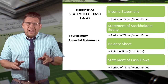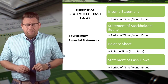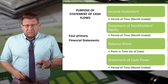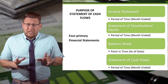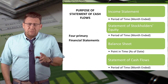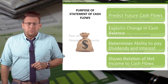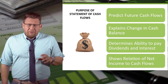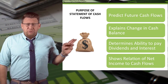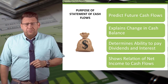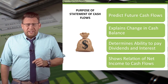The balance sheet, you recall, is for a point in time. So it tells investors and creditors about the financial position of a company on a specific date. The primary purpose of the statement of cash flows covers four items. Let's look at each one in a little more detail.